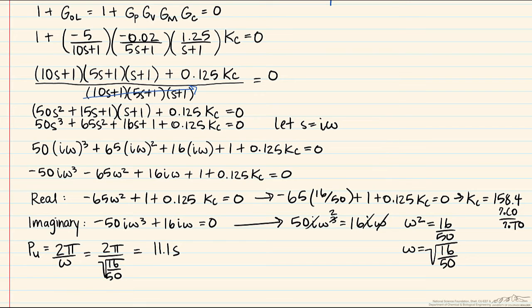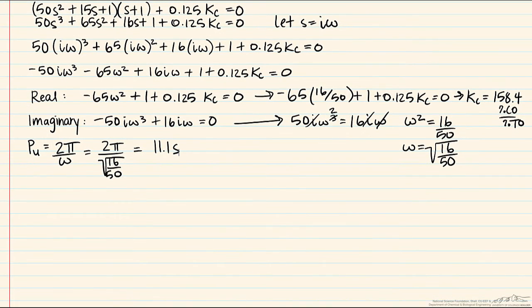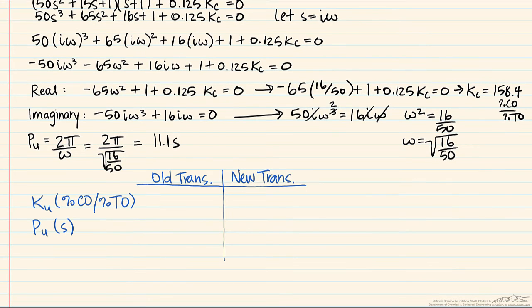We can now make a comparison between the two cases. We'll look at the difference between the old transmitter and the new transmitter with respect to the ultimate gain and the ultimate period. With the current transmitter the ultimate gain is 158.4 and the ultimate period is 11.1. Recall from the original problem our original ultimate gain was 83.2 and the ultimate period was about 18.2.